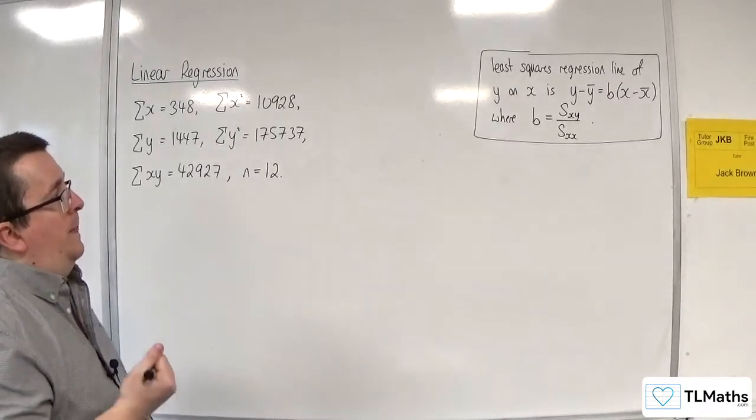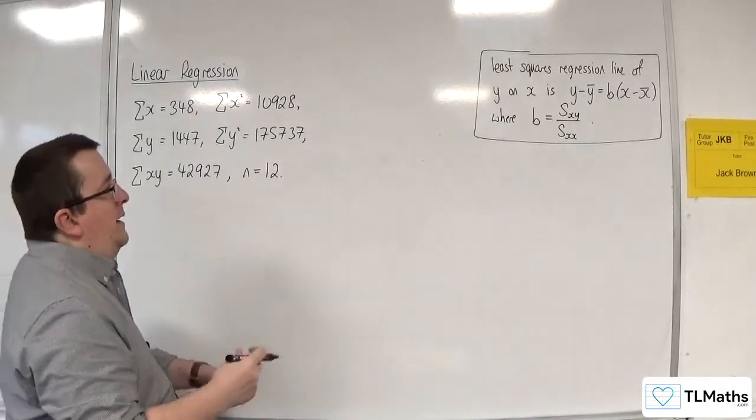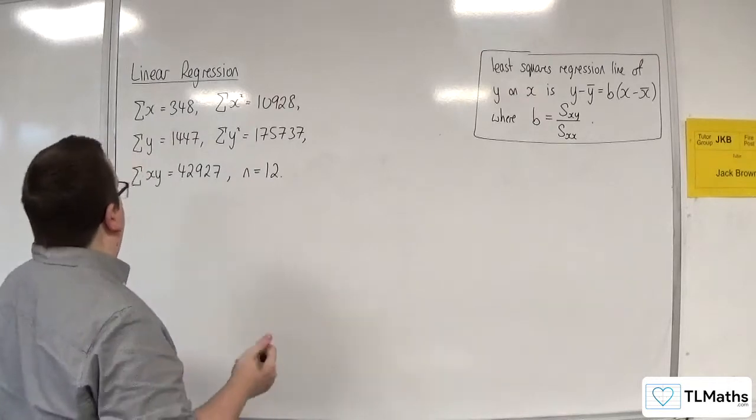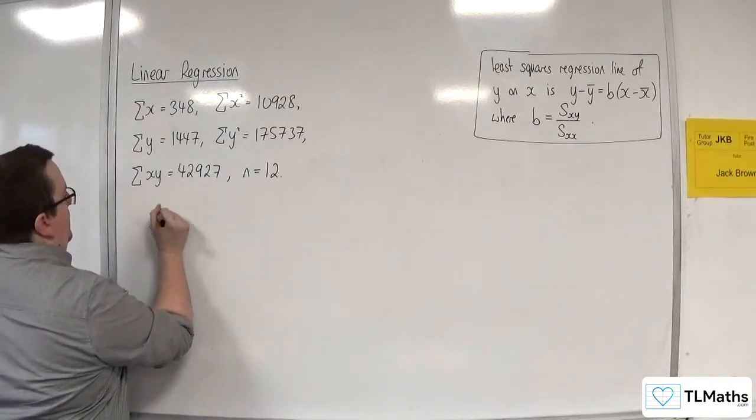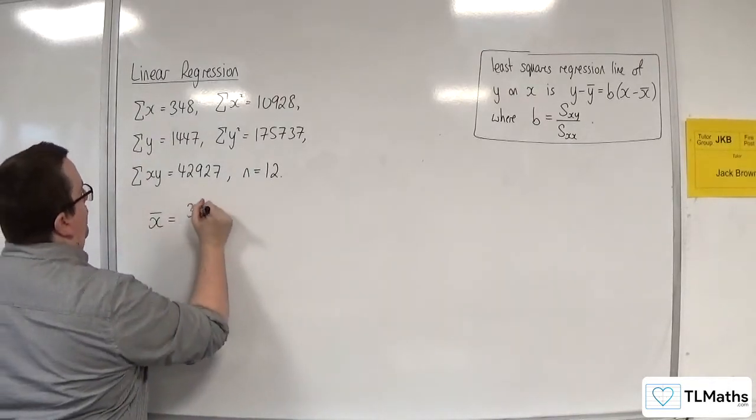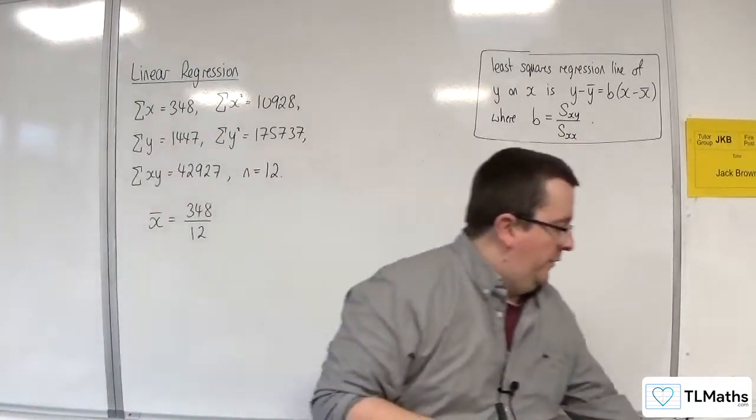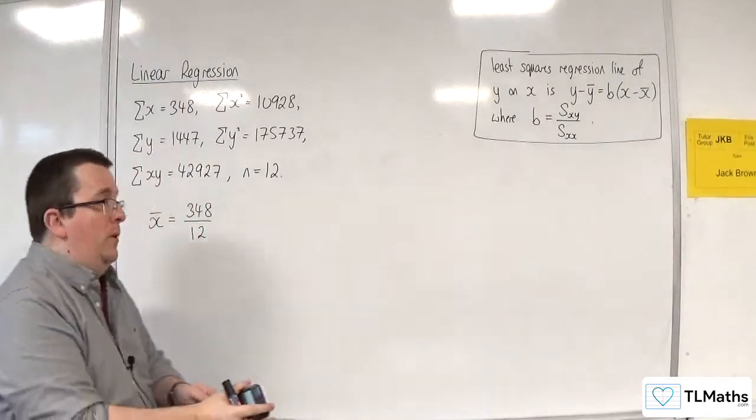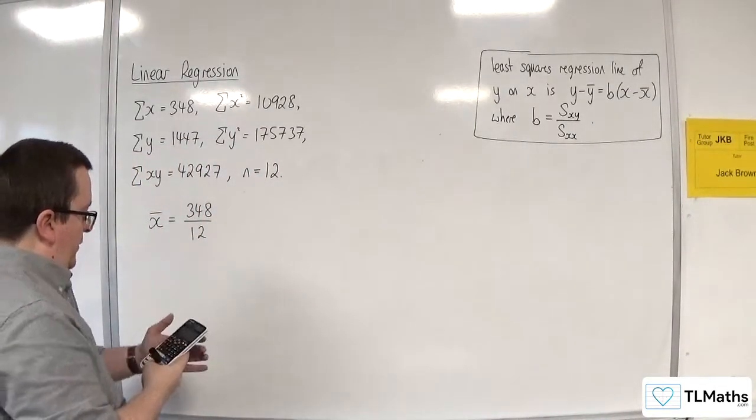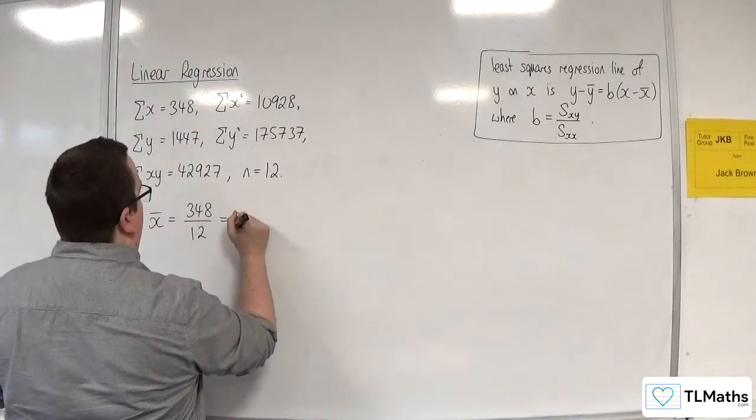Okay, so first things first, let's work out x bar and y bar. So x bar is 348 over 12. So the sum of x divided by n. 348 over 12. What does that simplify to? That's 29.